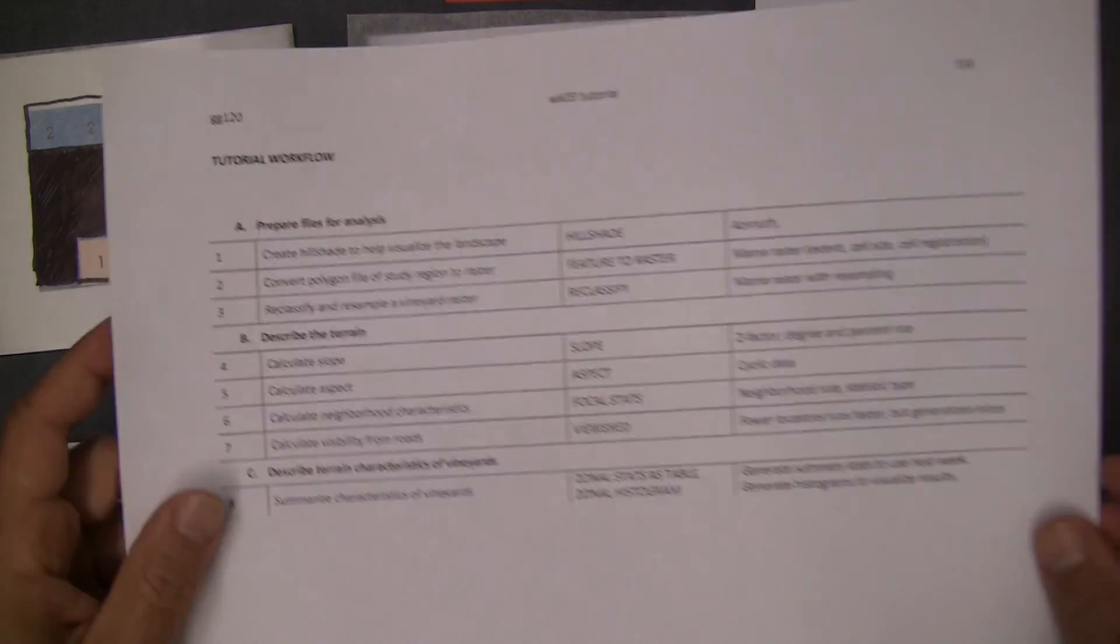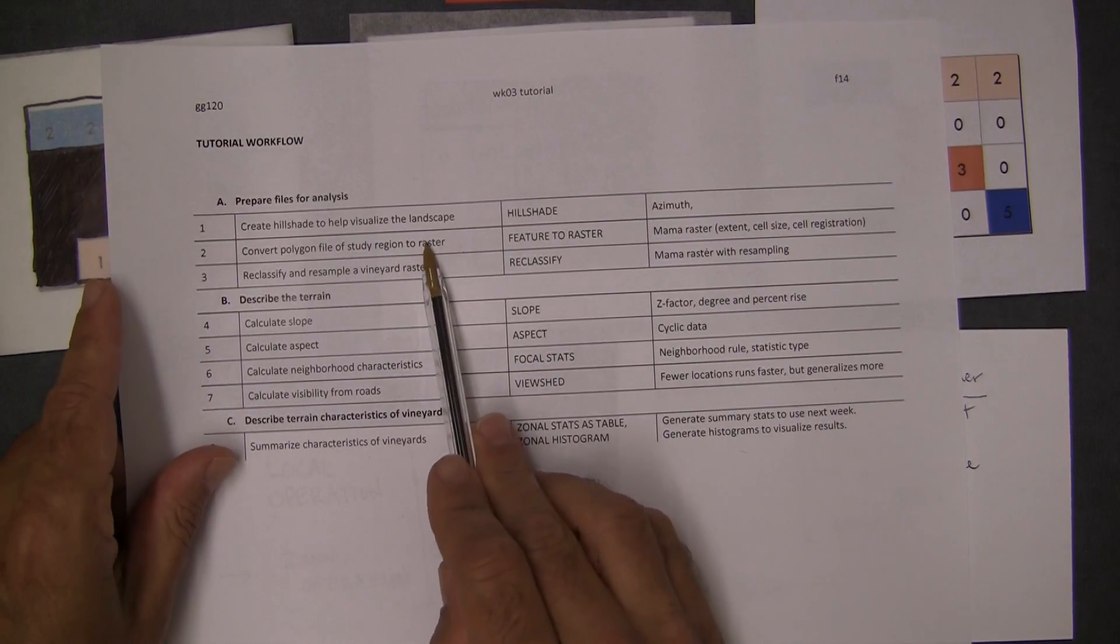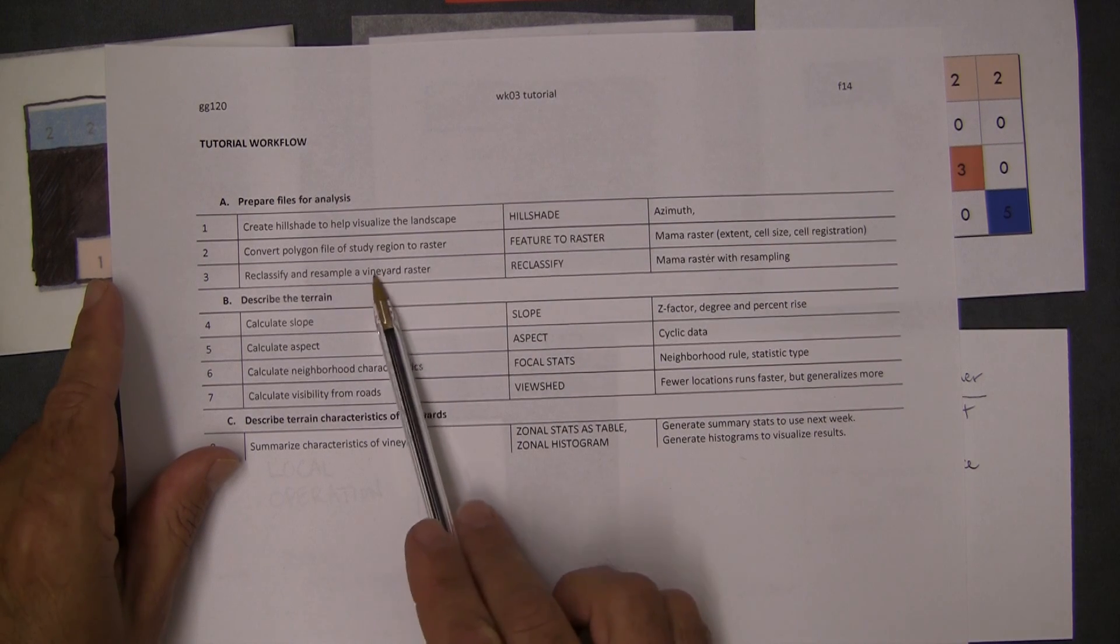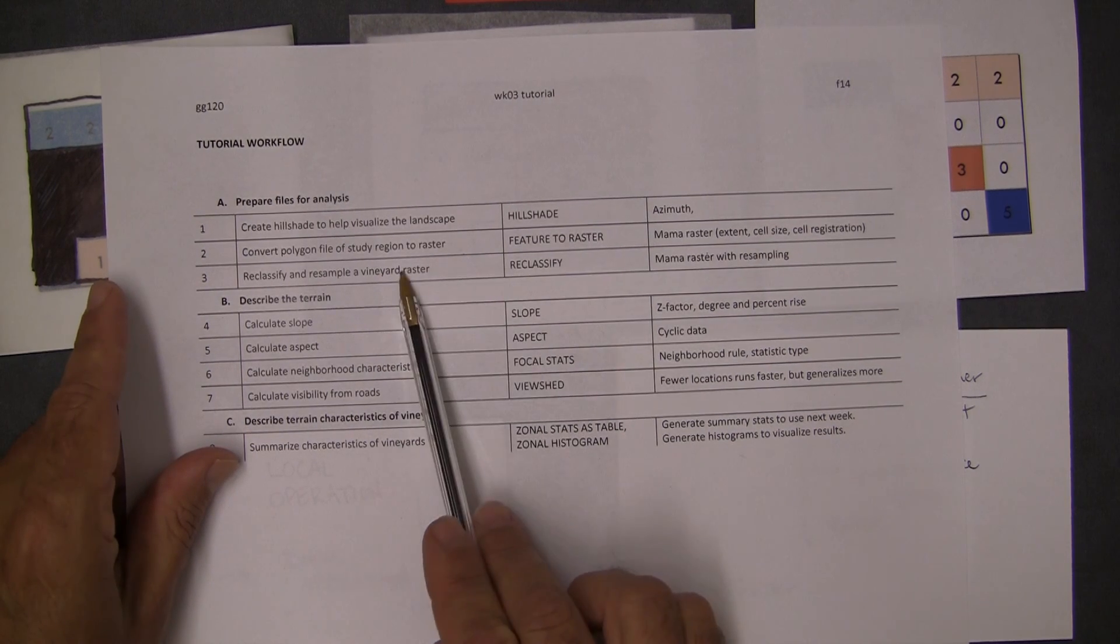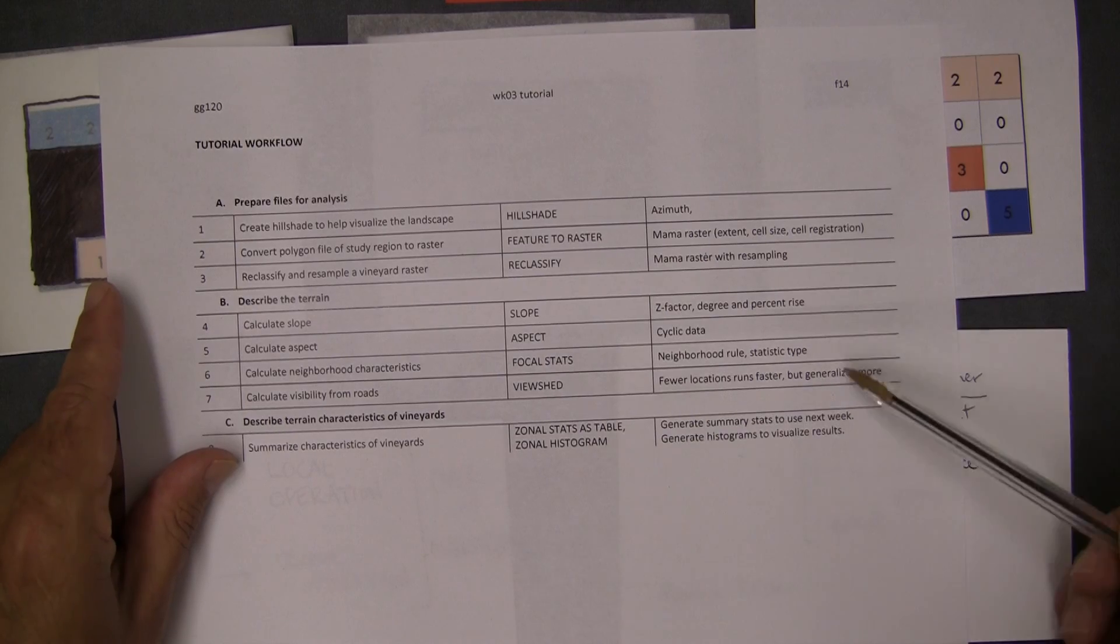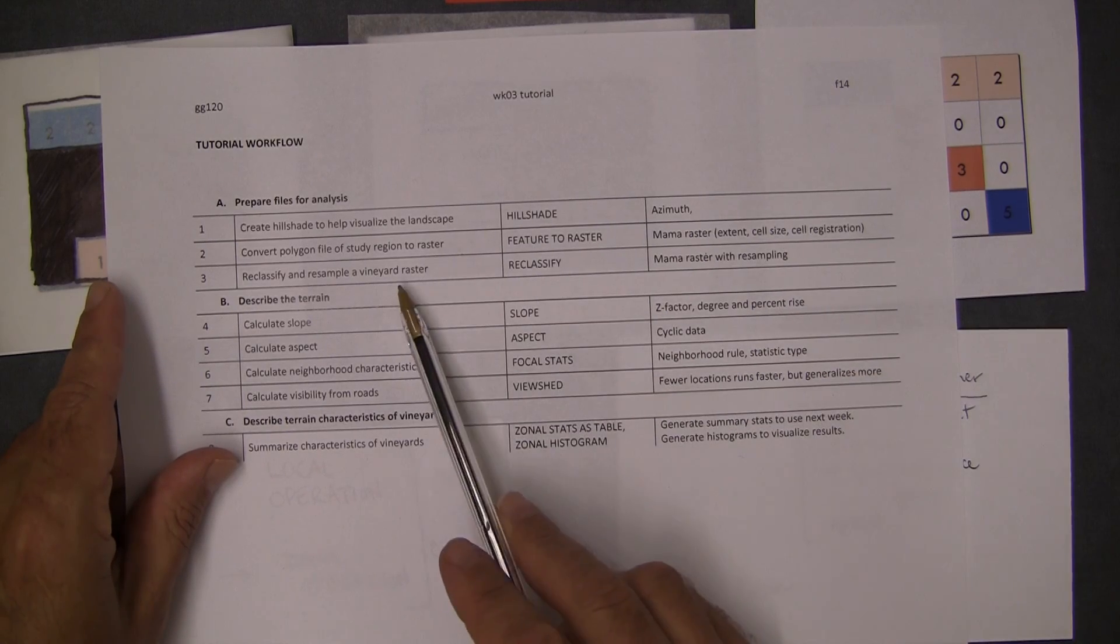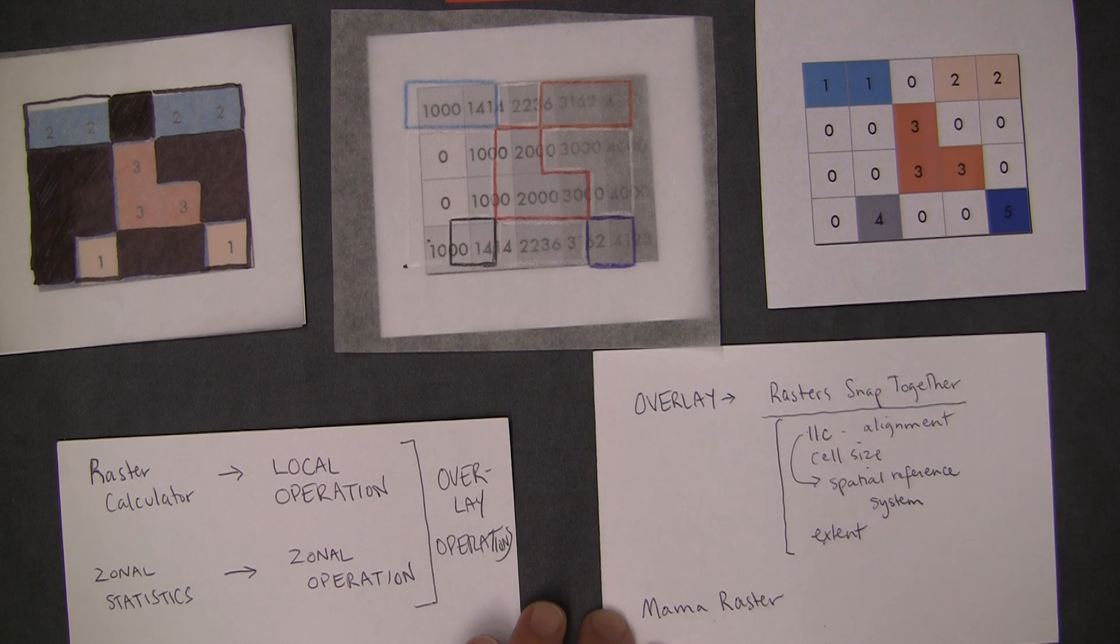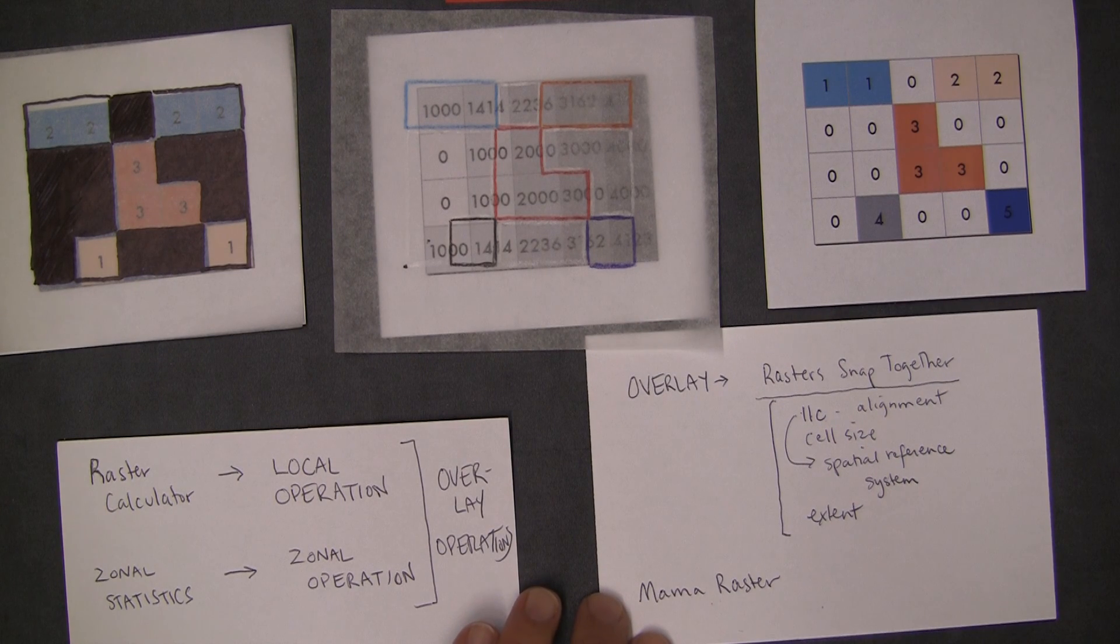So in this case, we are going to make a new raster. In this case, we're doing an operation in preparation for eventually doing some overlay analysis. And so that's, I think, the basic idea.